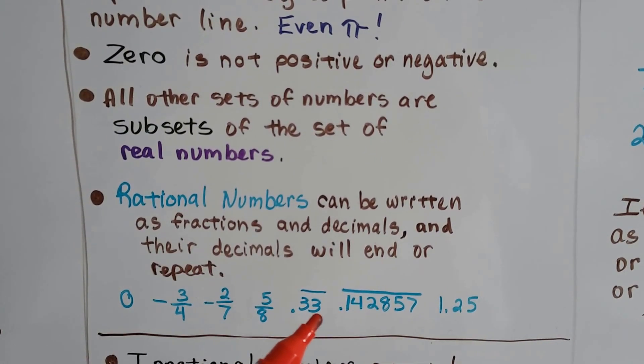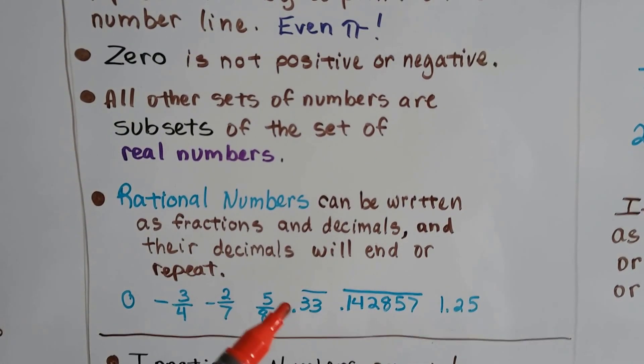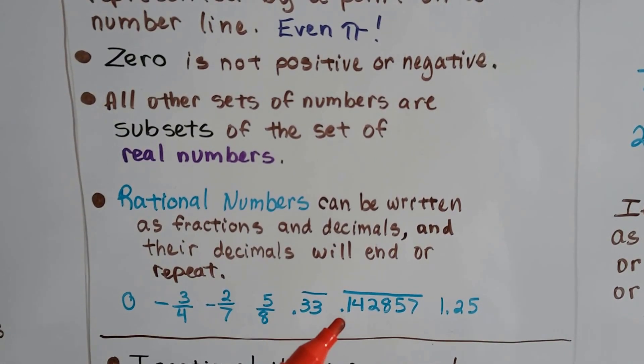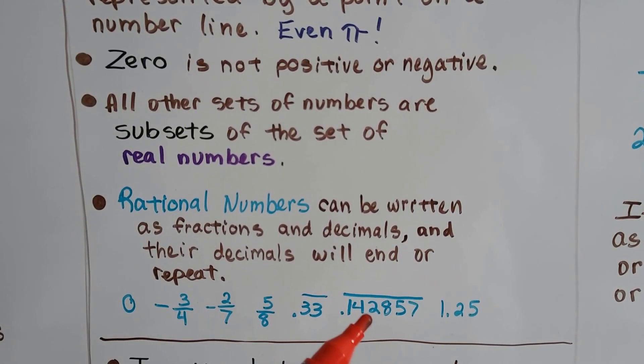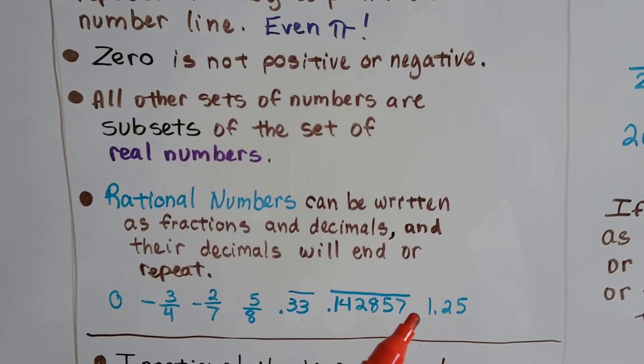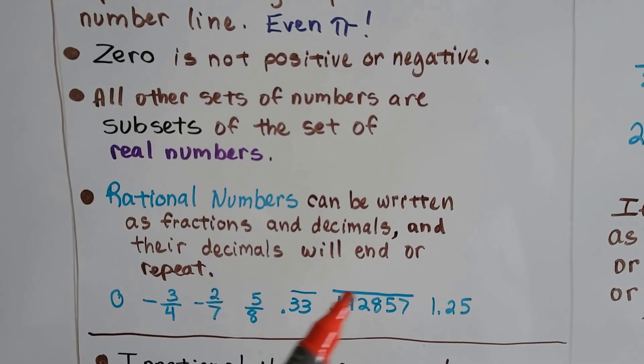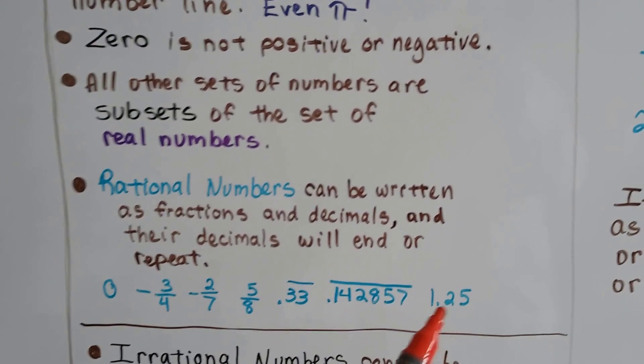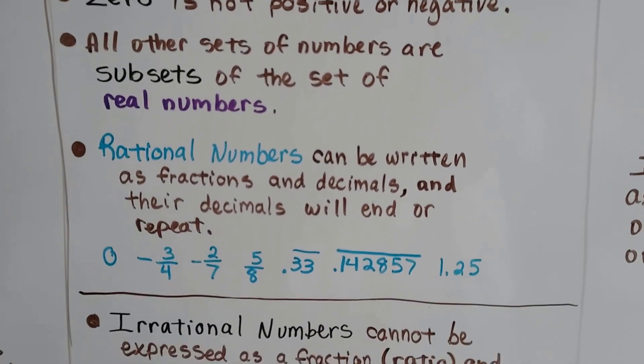One-third is 0.33—that just keeps repeating that 3. For 1/7, it's 0.142857, and the next digit would be 1, then 0.42857—all of these keep repeating. 1.25 is one and a fourth, a rational number.